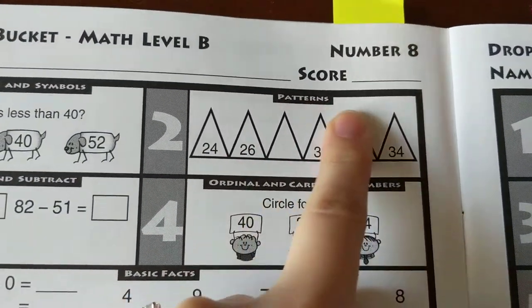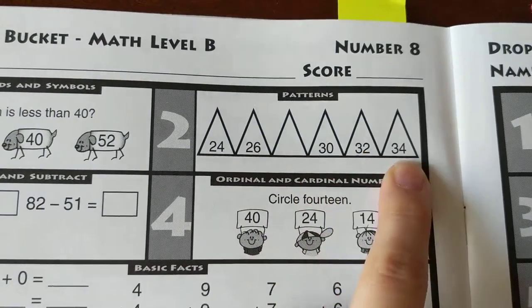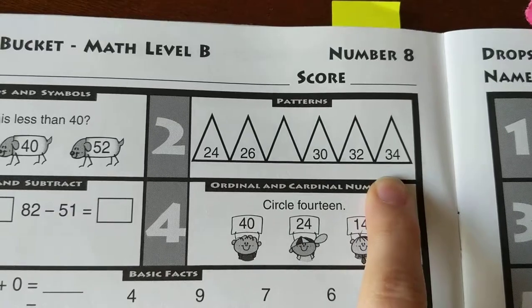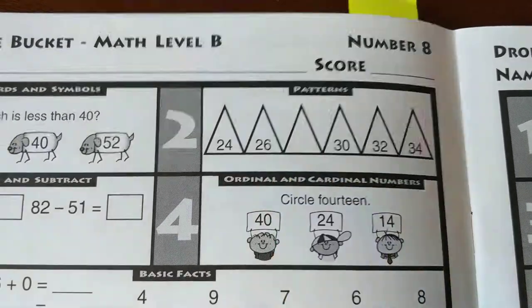Number two, patterns. 24, 26, 30, 32, 34. Now these are not counting by ones, they're counting by twos. So you're going to have to find which number is missing.